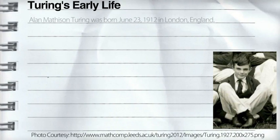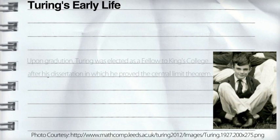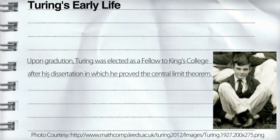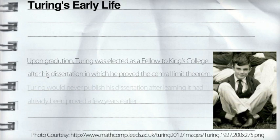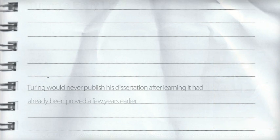Turing was born June 23, 1912, in London, England. He enrolled into King's College in 1931, and was there until 1934. Upon graduation, he was elected as a fellow to King's College after his dissertation in which he proved the central limit theorem. Turing would never publish his dissertation after learning it had already been proved a few years earlier.